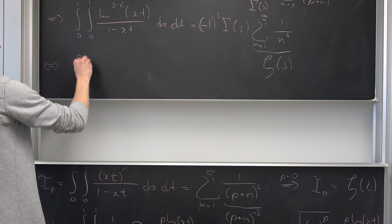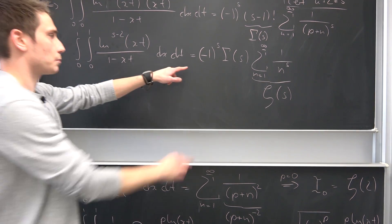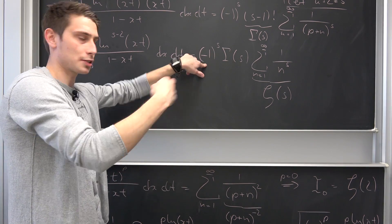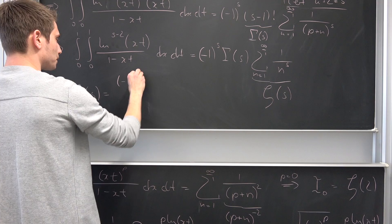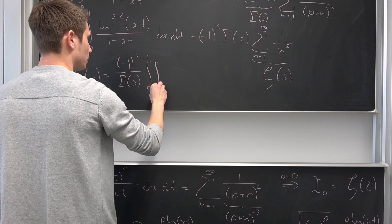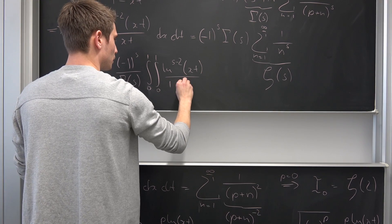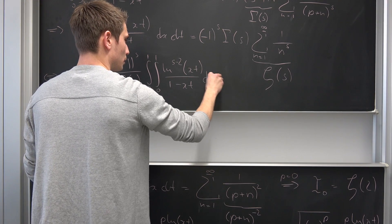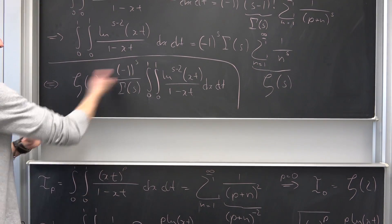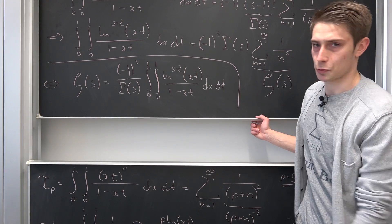Solving for zeta of s: we divide both sides by negative 1 to the s power and gamma of s. Since negative 1 to the negative s power equals negative 1 to the s power, we bring it to the top. Zeta of s equals negative 1 to the s power over gamma of s, times the double integral from 0 to 1 of natural log to the (s minus 2) power of (x times t) over (1 minus x times t). And then we are done — this is our solution, one of many integral representations of the Riemann zeta function.